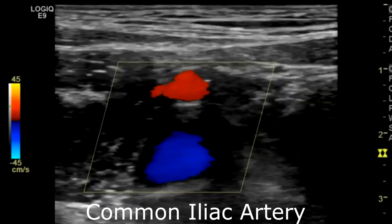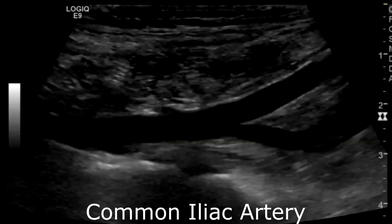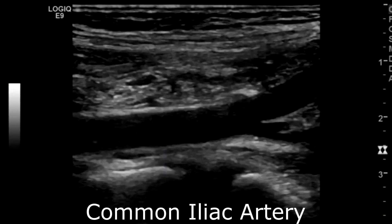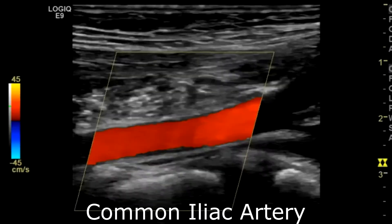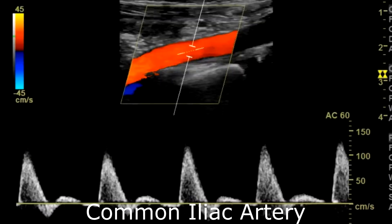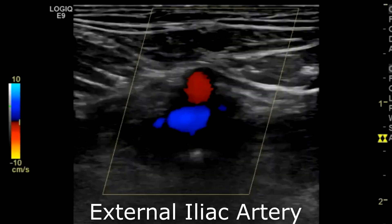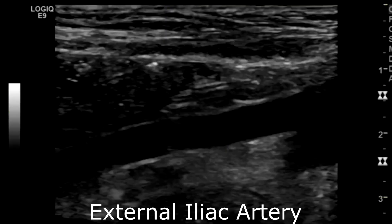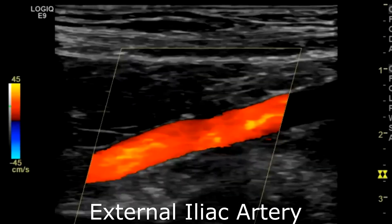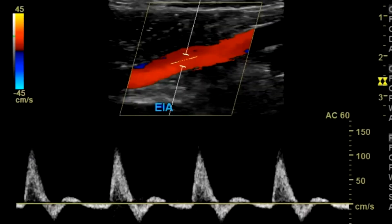Then the sagittal view of the common iliac artery — without color, with color, and with pulse wave Doppler. Then the external iliac artery — without color, with color, then sagittal view without color, with color, and with spectral Doppler.